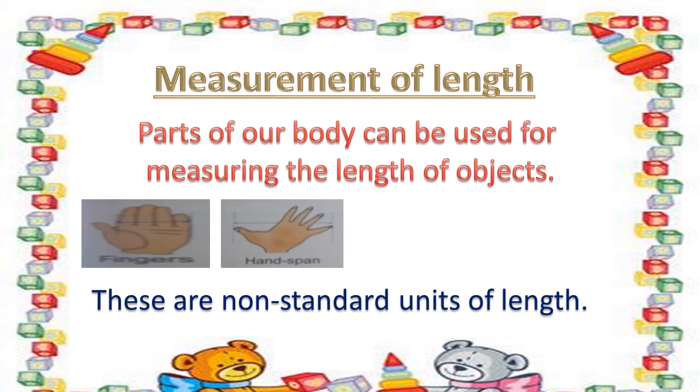Parts of our body can be used for measuring the length of objects. First one is fingers, handspan, cubit and space. These are known as non-standard units of length.